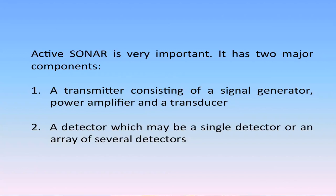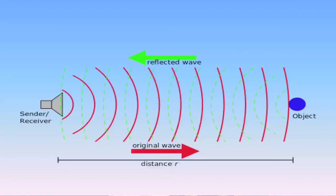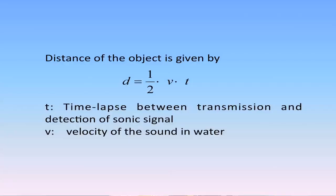Active sonar is very important. It has two major components: first, a transmitter which consists of a signal generator, power amplifier, and a transducer; second, a detector which may be a single detector or an array of several detectors. One has to ensure that the signal is sent as a narrow beam; if not, reflections will come from many directions and be confusing. Theoretically, the distance travelled by the waves is twice the distance between the transmitter/detector and the target. So, if the velocity of sound in water is V, the distance of the object is given by d equals half times V times t, where t is the time lapse between transmission and detection of the sonic signal.